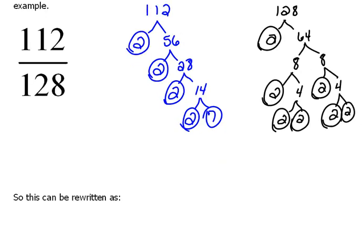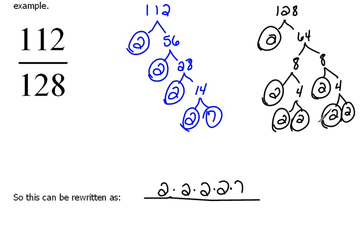By doing this, we can rewrite our problem. Instead of 112, we write it as 2 times 2 times 2 times 2 times 7. And instead of 128, we write it as seven 2's — that is, 2 times 2 times 2 times 2 times 2 times 2 times 2. We can rewrite this whole fraction using only prime numbers.